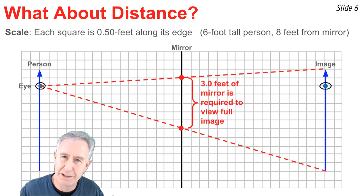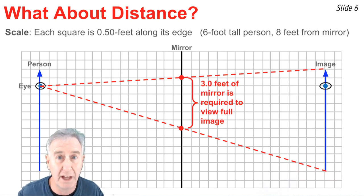And it's still six squares. The person, six-foot-tall person, still needs three feet of mirror to view the entire image. That's one-half the height.